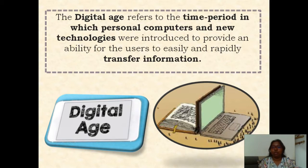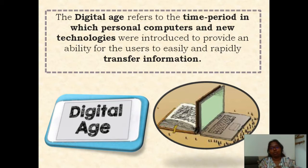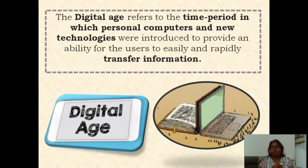What it is trying to say is that information needs to be transferred easily and fast. The basic concept behind the existence of this particular branch is the broadcasting of information and the communication between two users. For that, electronic devices were introduced and designed so that there can be better communication and better advancement in this communication.